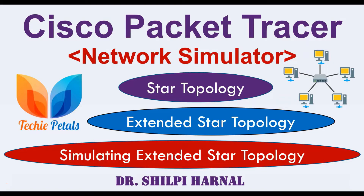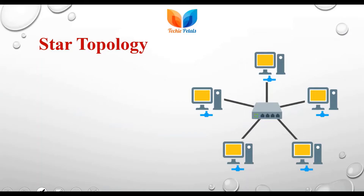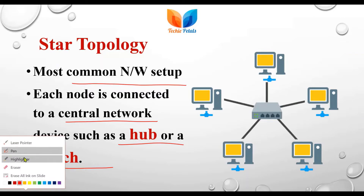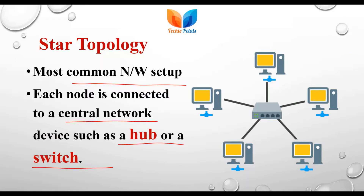In this video we are going to extend the star topology to extended star topology, where we can create a bigger network with Cisco Packet Tracer. Star topology is the most common network setup where all devices are connected through a central network device — a hub or a switch. A hub performs broadcasting: if it receives a packet from one device it forwards it to all other connected devices, whereas a switch works intelligently and transmits the packet only to the destination node.